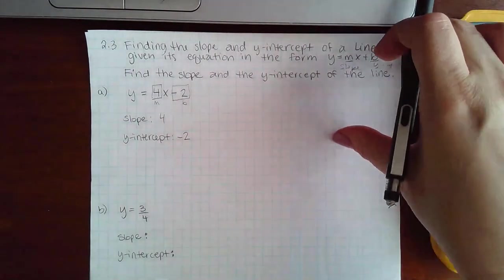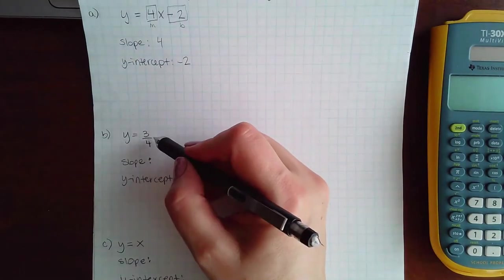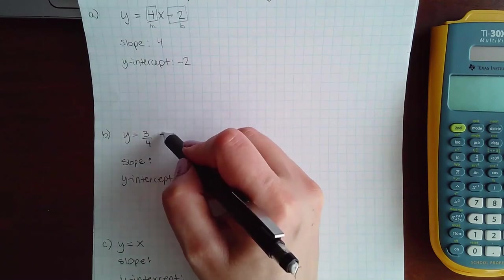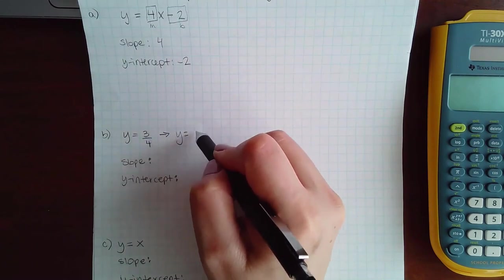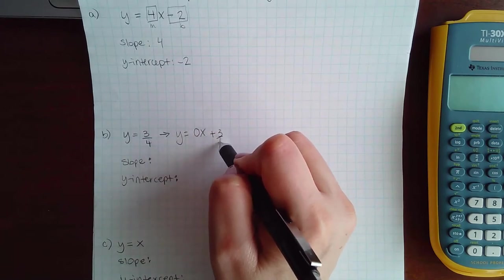Now they get a bit trickier, so let's go ahead and look at this one. So here I do not have any x's whatsoever. What you could do is you could rewrite this as y equals no x's and then a positive three-fourths.